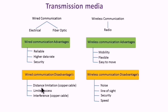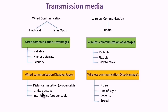Wired network is affected by distance — this is applicable to electric only, not fiber optic, as fiber optic is very good in terms of distance coverage. Also, there is no mobility as only physical connection is possible.